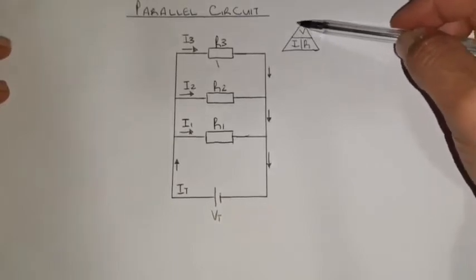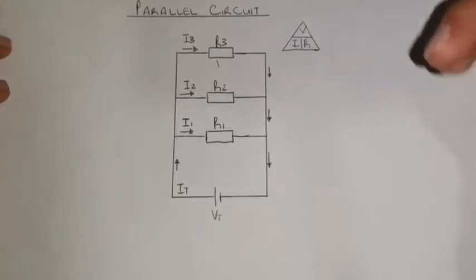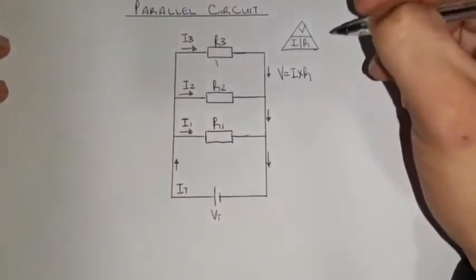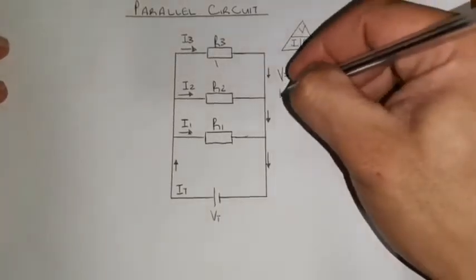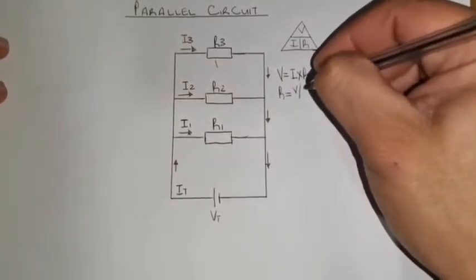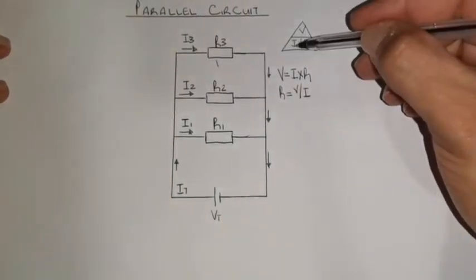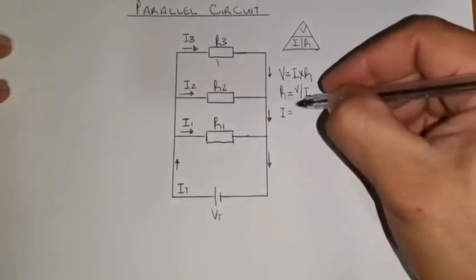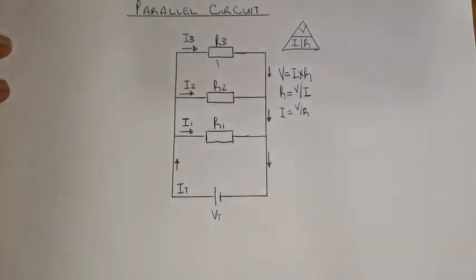Let's say you want to calculate a voltage — V is equals to I times R. If you need your resistance, it's going to be R equals to voltage divided by current, so R = V/I. And to calculate my current, I is equals to my voltage divided by my resistance, I = V/R. Those are the three formulas that you will be needing to do calculations here.